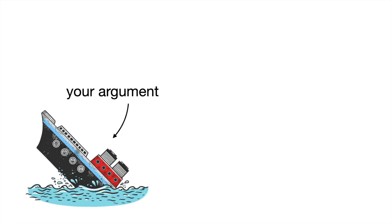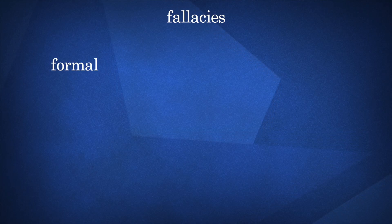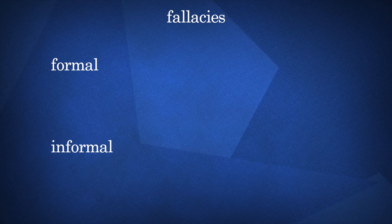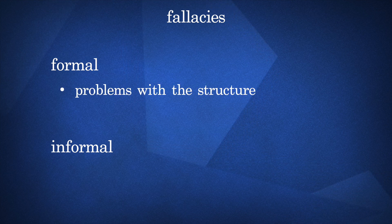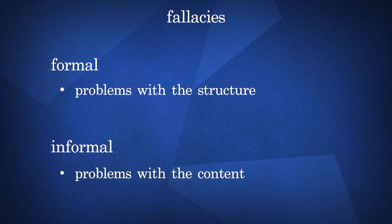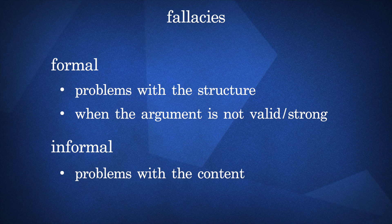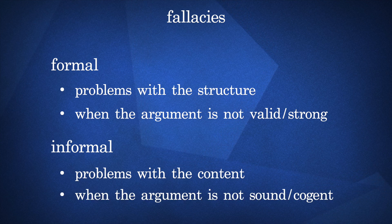When there's a problem with your argument — rendering it invalid, not sound, weak, not cogent, or not even wrong — it's called a fallacy. There are two types of fallacies: formal fallacies and informal fallacies. Formal fallacies are problems in the form of your argument — problems with the structure. Perhaps the premises don't support the conclusion, so even if the premises are true, the argument is flawed because the setup is invalid. Whereas informal fallacies are problems with the content of your argument — the argument might be valid, but it isn't sound because at least one of the premises isn't true. So a formal fallacy is when the argument is not valid or strong, and an informal fallacy is when the argument is valid or strong but not sound or cogent.